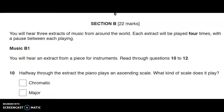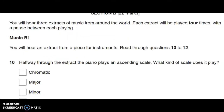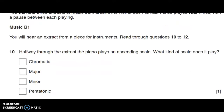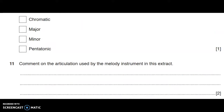You will hear an extract from a piece for instruments. Read through questions 10 to 12. Halfway through the extract, the piano plays an ascending scale — what kind of scale does it play? The options are chromatic, major scale, a minor scale, or a pentatonic scale, and you have to tick one of those boxes. Then comment on the articulation used by the melody instrument in this extract — so the instrument playing the melody — for two marks.